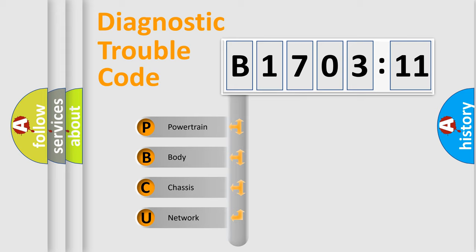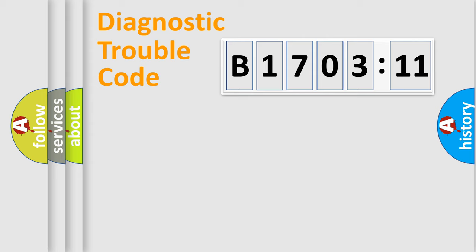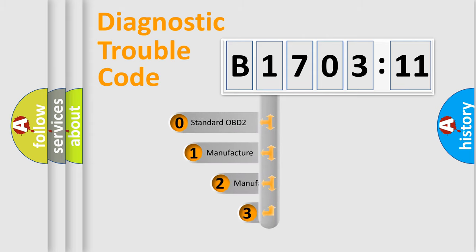We divide the electric system of automobiles into four basic units: Powertrain, Body, Chassis, and Network. This distribution is defined in the first character code.